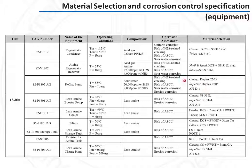For example, a pump may be specified as having internal materials of construction corresponding to category D1, another to A8, and so on.